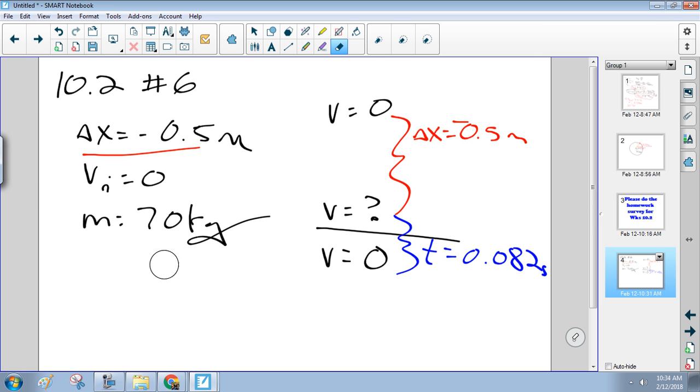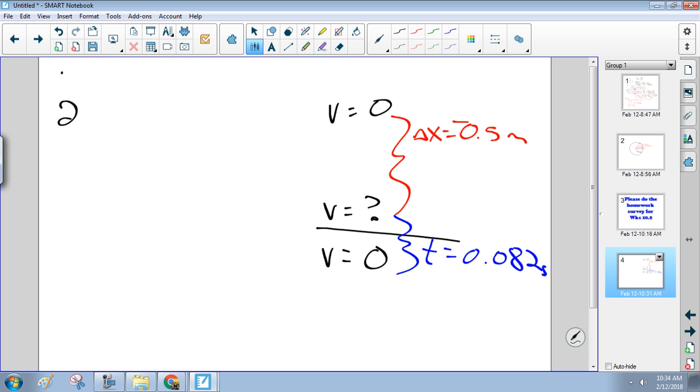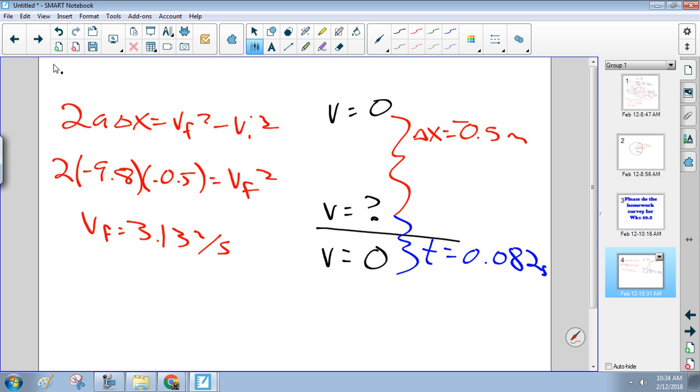Okay, so probably want to use this guy. Let's do it in red since it corresponds to that red time interval. So 2a∆x equals vf squared minus vi squared, right? So 2 times negative 9.8 times negative 0.5 equals vf squared minus 0. So whatever the square root of 9.8 is. 9.8 square rooty. 3.13. All right, is everybody good with that?